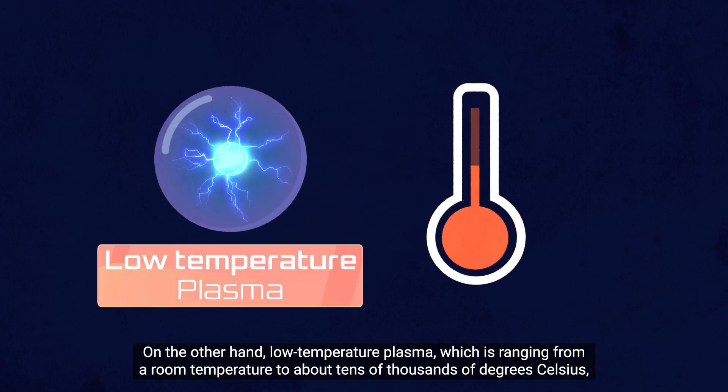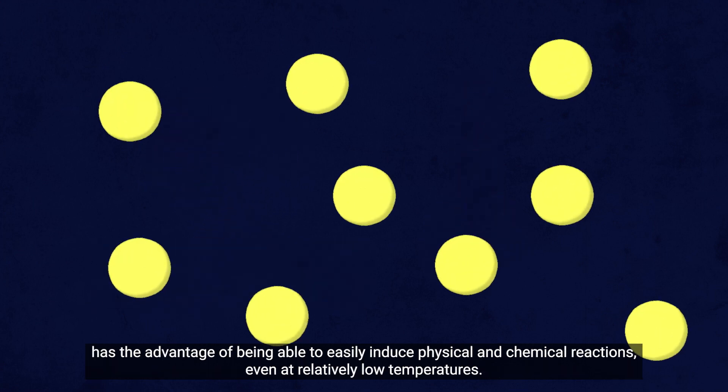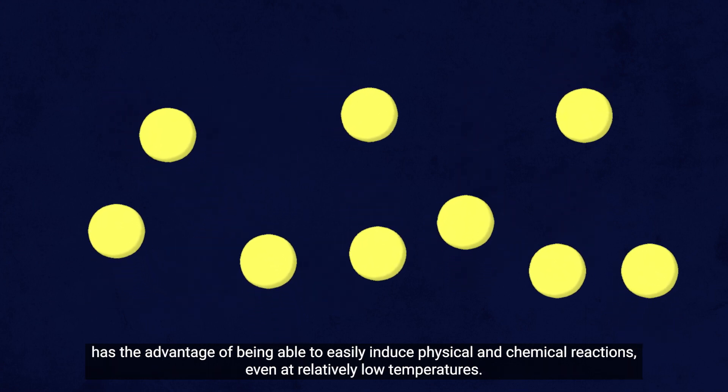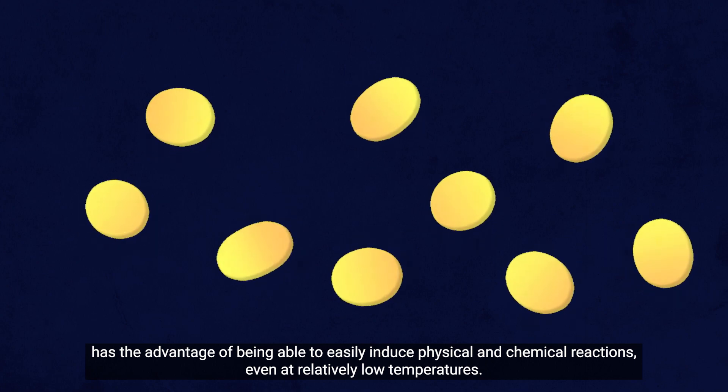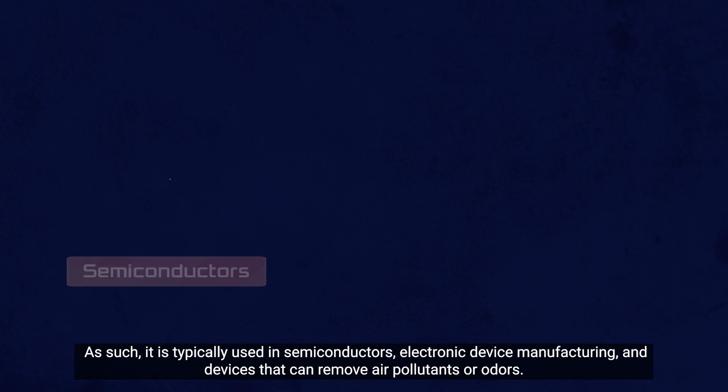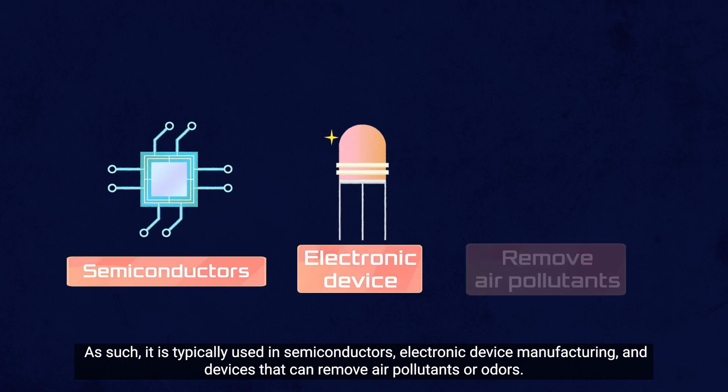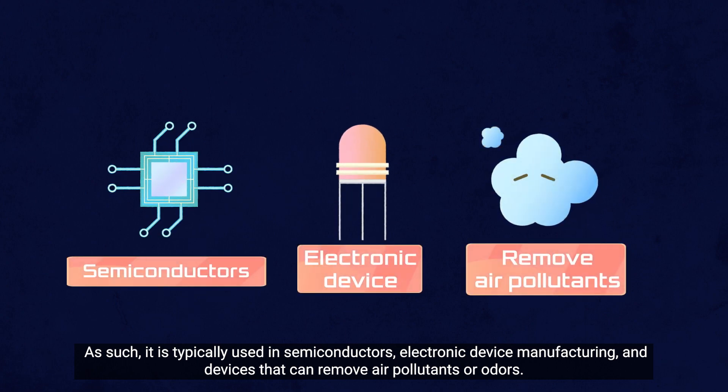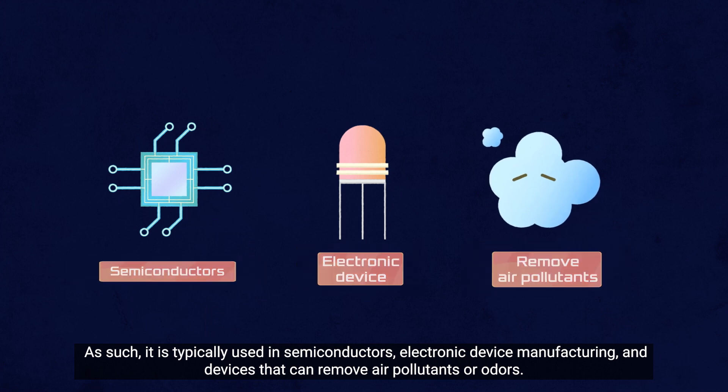On the other hand, low-temperature plasma, which ranges from room temperature to about tens of thousands of degrees Celsius, has the advantage of being able to easily induce physical and chemical reactions, even at relatively low temperatures. As such, it is typically used in semiconductors, electronic device manufacturing, and devices that can remove air pollutants or odors.